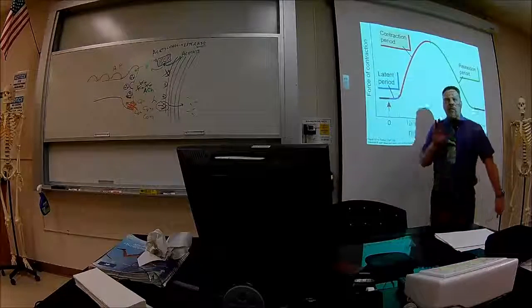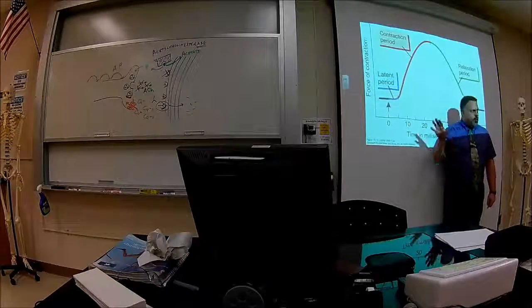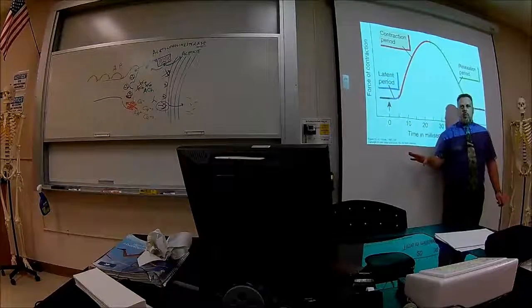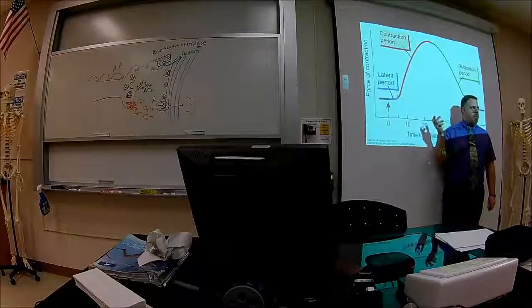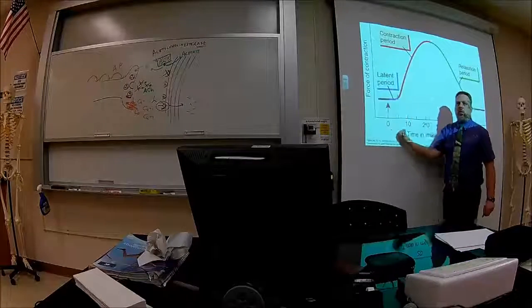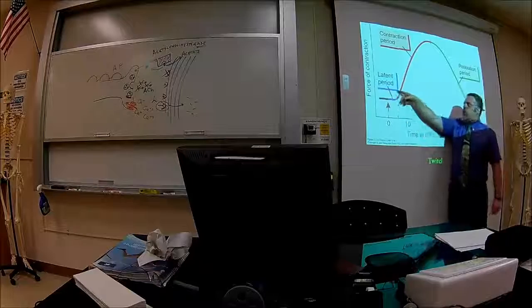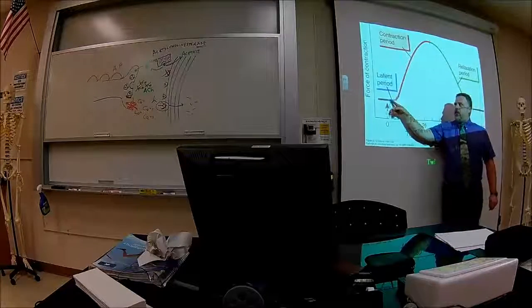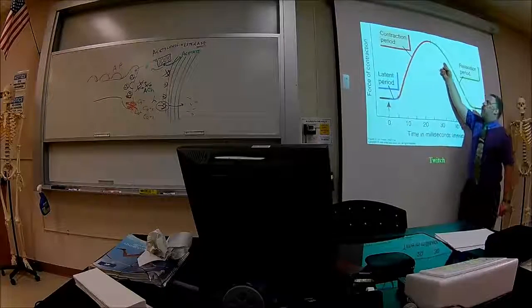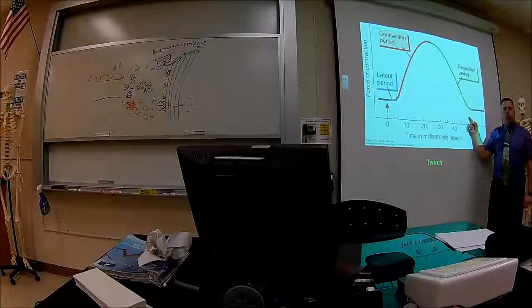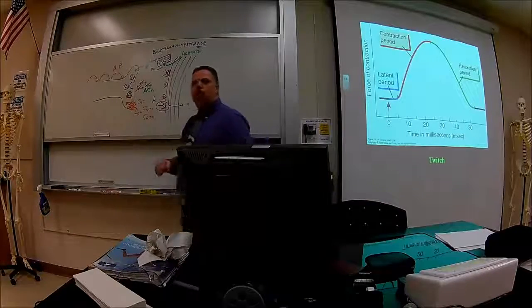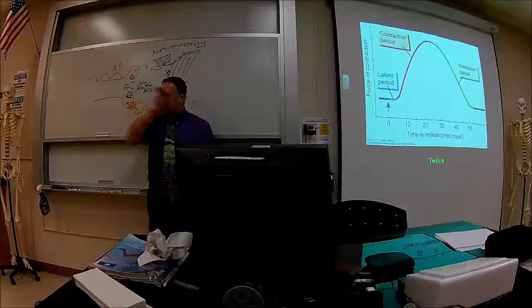These are the three phases of a twitch. On a myogram, the x-axis is time and the y-axis is force of contraction. This is not the same as an action potential graph — it looks different. The latent phase appears first, then the contraction phase, and then the relaxation phase shown in green. You cannot see a twitch happening on your arm; it can only be seen on a graph or computer printout.